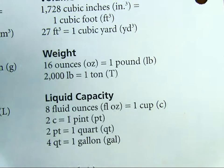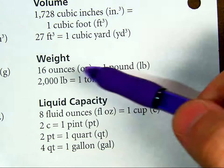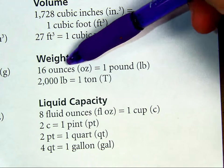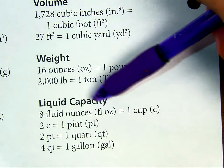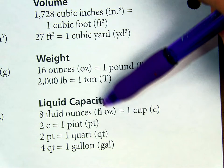Anyway, going down to weight, this one you use fairly often. There are 16 ounces in a pound. This is not to be confused with fluid ounces. That's down here. They are different.